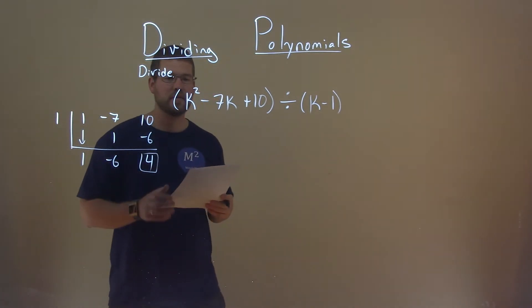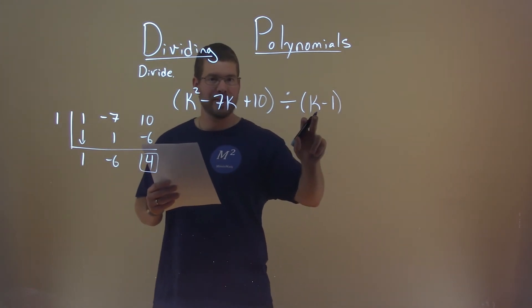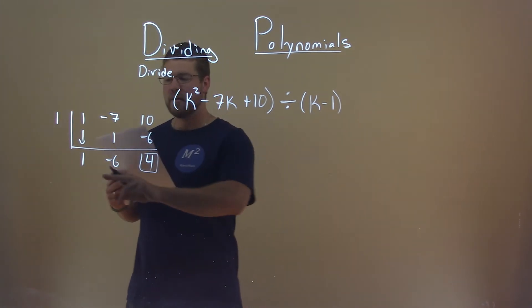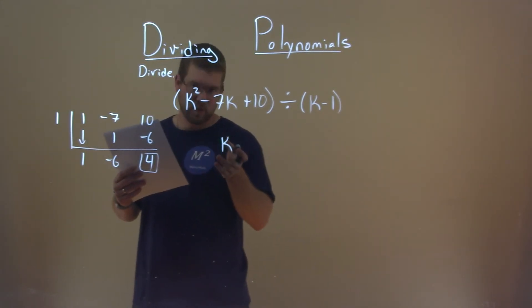So, now let's translate this into our final answer. Well, k squared divided by 1k leads us to just k to the first power, so that goes with our first coefficient, 1. So, we're left with just k, 1k.